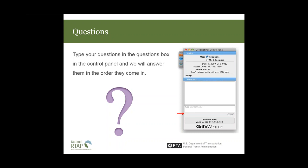Question: What can FTA do to allow funding for intercity bus service to Amtrak? As our state becomes more rail-centric, we have a tough time approaching intercity carriers. Answer: All of the requirements and eligibility mentioned are statutory requirements. FTA doesn't have the ability to change the eligibility. Right now, intercity rail is not eligible as stated by Congress, so that's not something FTA can change.